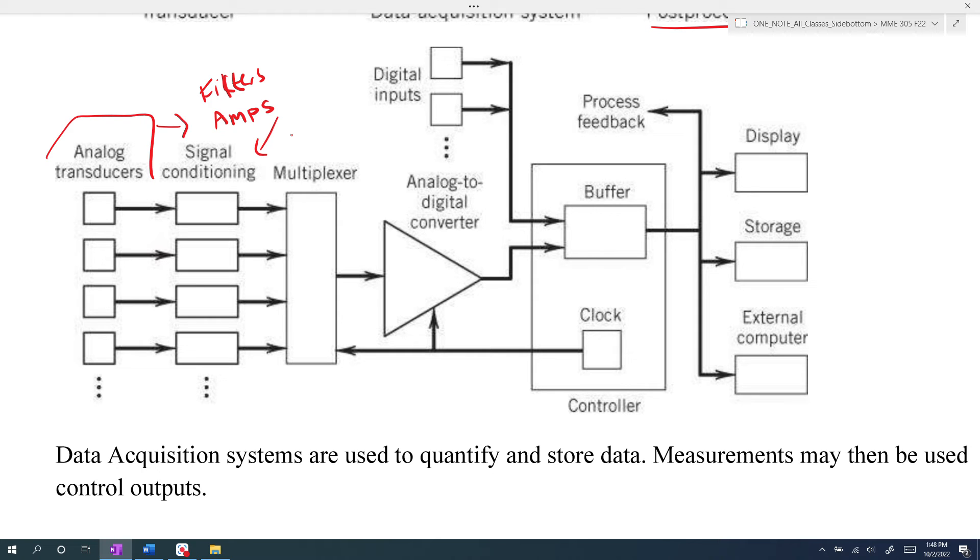So after the signal has been conditioned, it goes into a multiplexer, and then that multiplexer basically directs the different channels into an analog-to-digital converter. And then the analog-to-digital converter goes to our device, and typically the device will also have some type of control that might affect the feedback and affect the signal going forward.